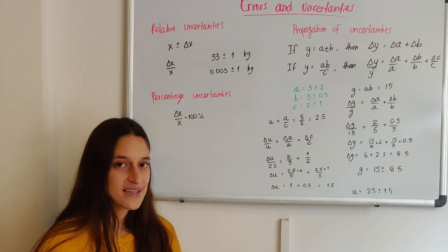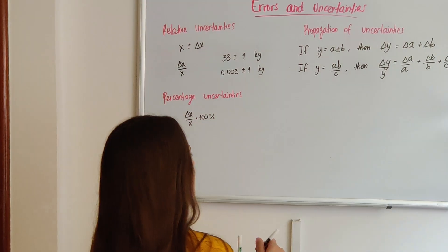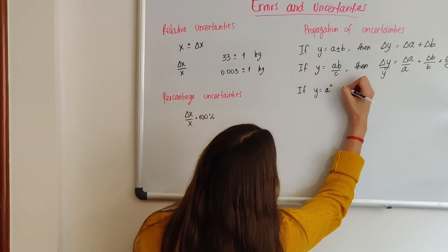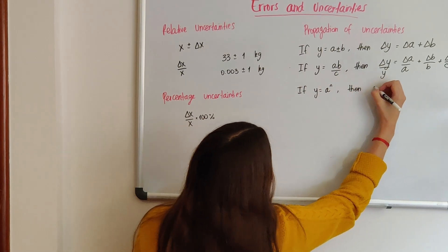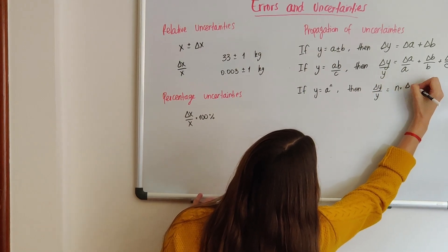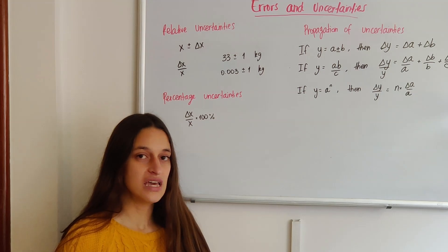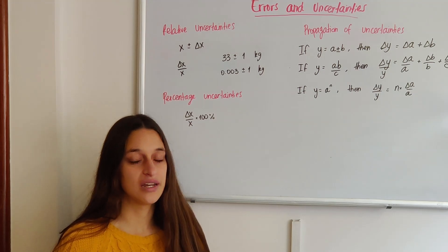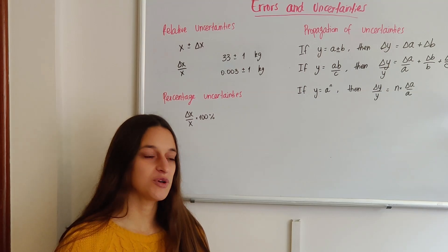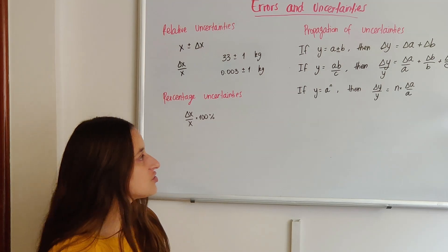We're only missing our last equation that is in the data booklet about propagation of uncertainties. If y equals a to the power of n, then delta y over y equals n times delta a over a. So in this case, we have only one experimental value, a, and its uncertainty. And n is an exponent that we're going to use. This works, for example, when we measure a value, but we want to know what that value squared is, and the uncertainty of that value squared.